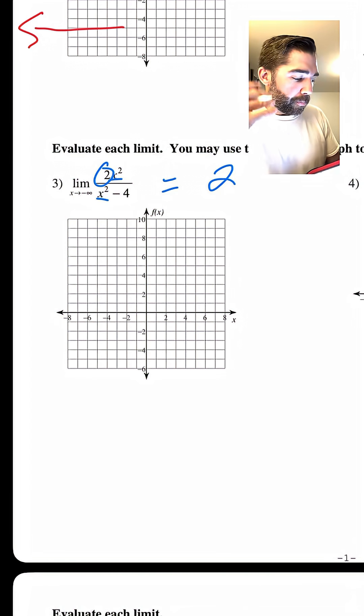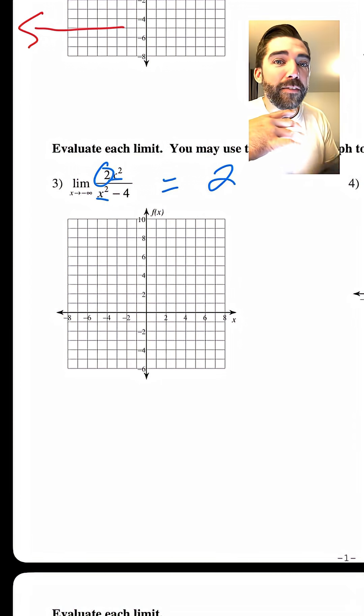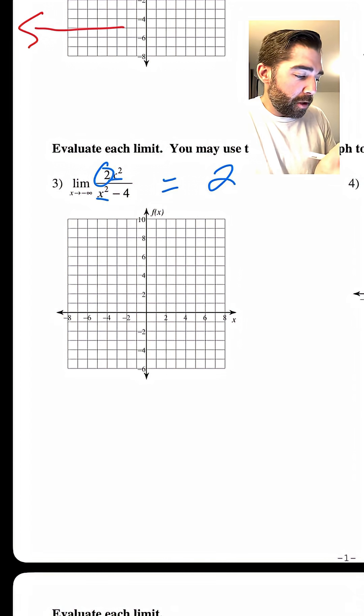But if you think about it, if you plug in a really large negative number, like think about like negative 1,000, negative 100,000, negative 1 million, well, these two numbers are growing at the same rate, if you will, right?